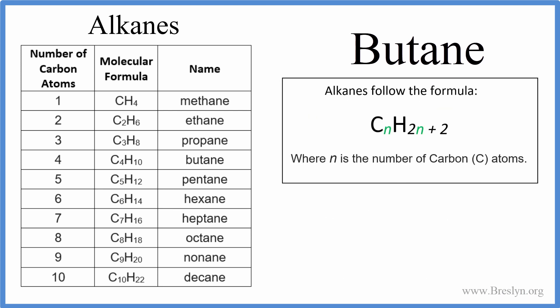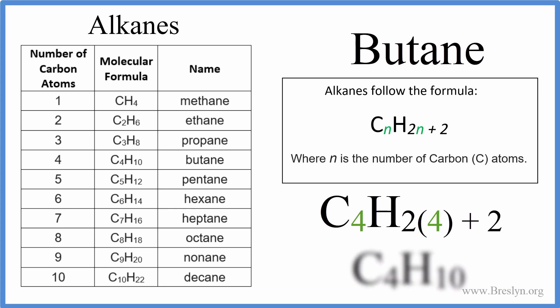If we want to write the actual chemical formula for butane, we can use this formula, which applies to all alkanes: CnH(2n+2). Butane has four carbons, so C times 4 and H times (2×4 + 2), which gives us a formula of C4H10.